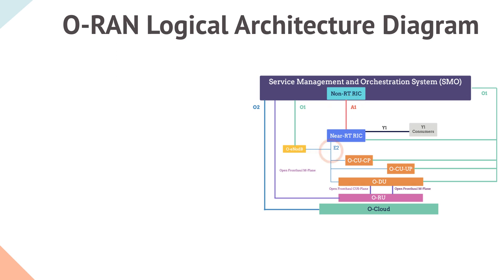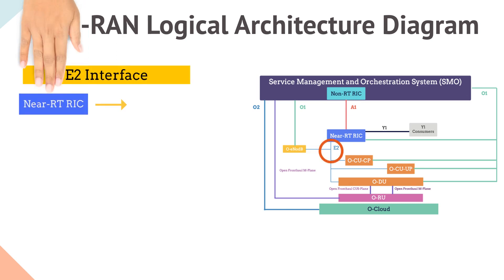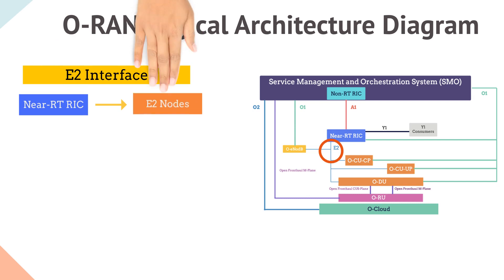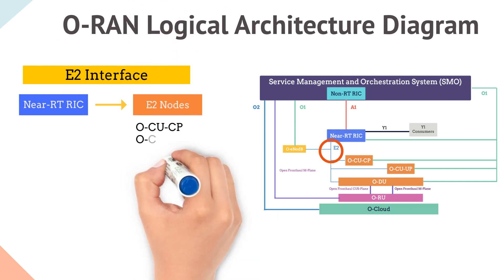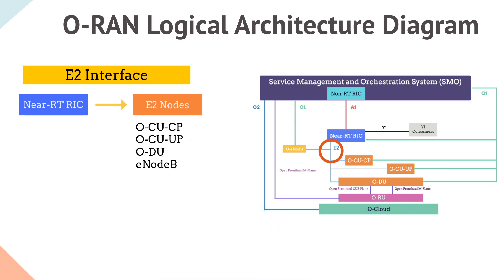Now let's talk about the E2 interface. E2 is a logical interface connecting the near-RT RIC with E2 nodes. E2 nodes refers to CU-CP, CU-UP, ODU and eNodeB. The E2 interface allows the near-RT RIC to control procedures and functionalities of the E2 nodes.